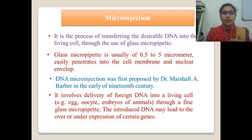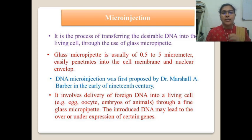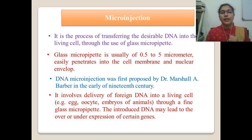This introduced DNA may lead to either over or under expression of certain genes. Generally, this technique is extensively used with the animal cell, whereas microinjection of DNA in the plant cell has achieved limited success. This is largely because of the difficulties in getting the protoplast immobilized, and introduction of DNA into that protoplast without damaging the tonoplast — that is, the vacuolar membrane — is very difficult.